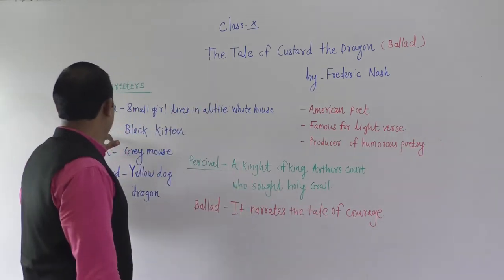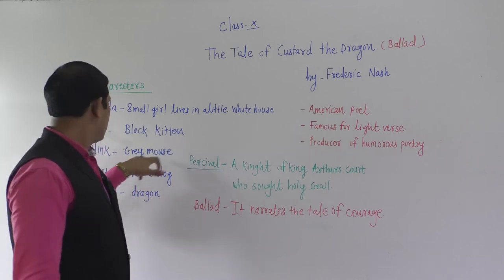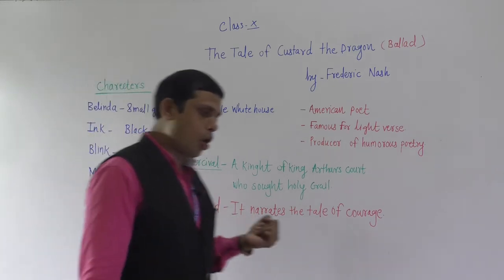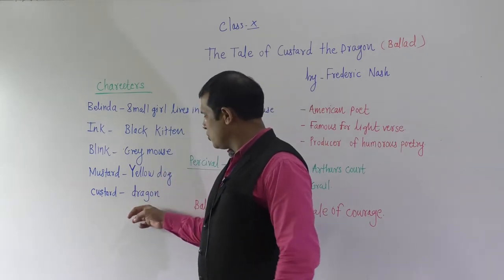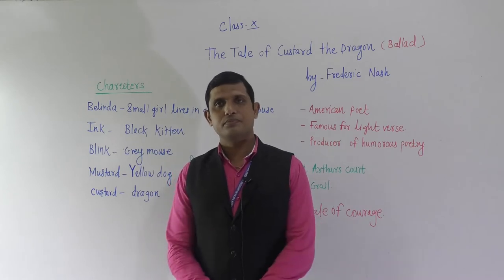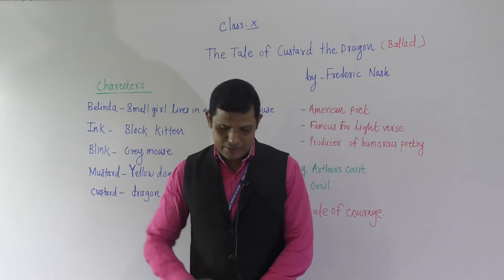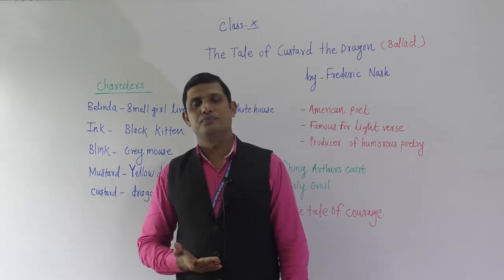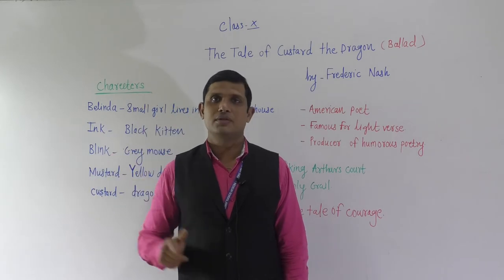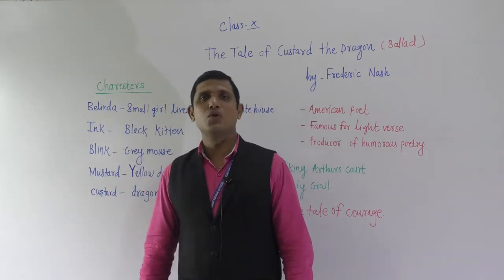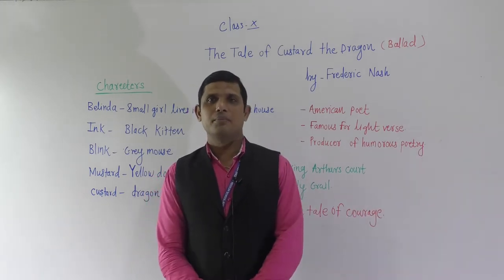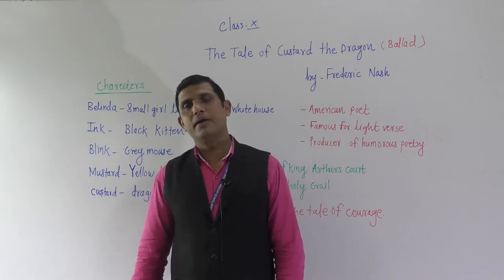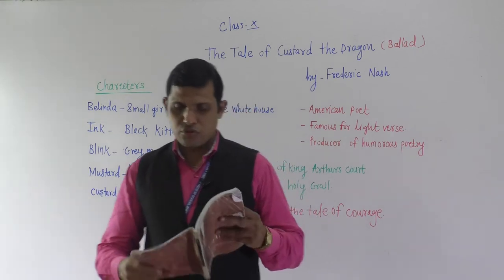In this poem, the black kitten Ink is very powerful and brave, Blink the gray mouse is also brave, and Mustard the yellow dog is also powerful and brave. But Custard, though looking so powerful, is not brave at all — he is very timid. That is exactly what the poet says. Then there comes a climax where everybody understands that Custard is actually more powerful than anyone, but he doesn't show it. He admits that everyone else is braver than him.